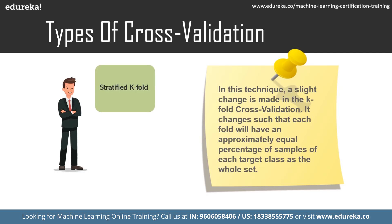Next is stratified K-fold cross validation, where a slight change is made to K-fold. Each fold will have an approximately equal percentage of samples of each target class as the whole set, or in prediction problems, the mean response value is approximately equal in all folds. In cases with large imbalance in response variables — for example, housing prices where some are much higher than others, or classification problems with more negative than positive examples — we use stratified K-fold cross validation.